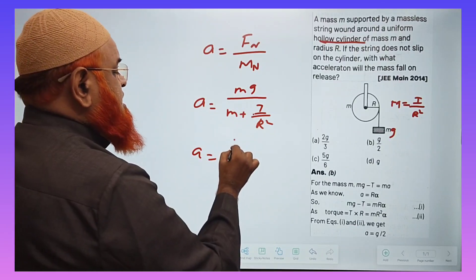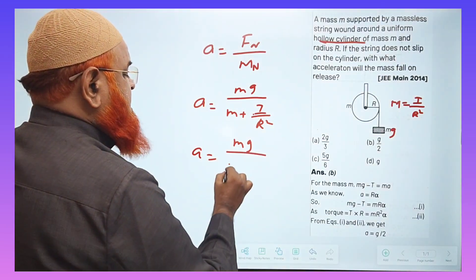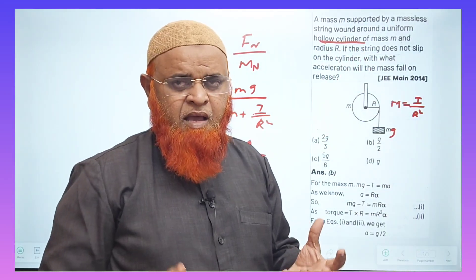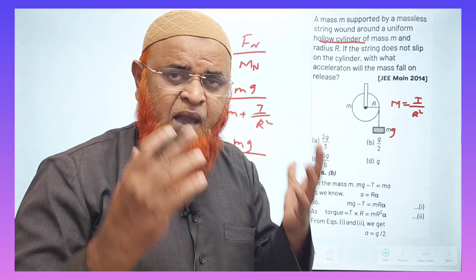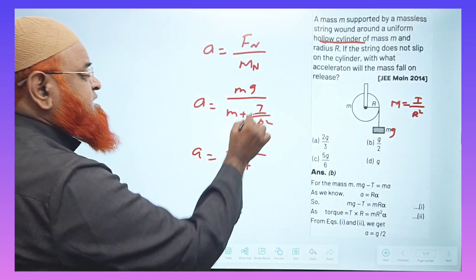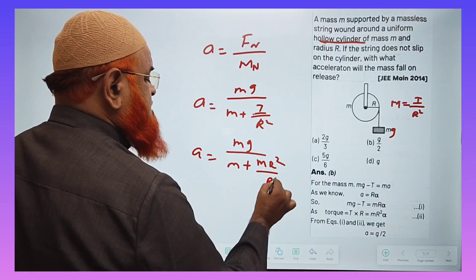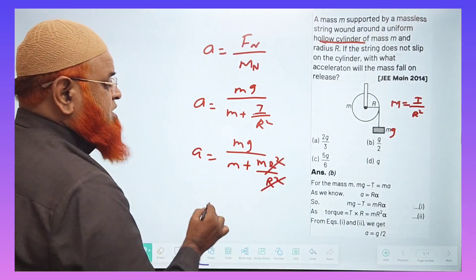Acceleration is going to be Mg by M plus, you know that this is a hollow cylinder. Hollow cylinder and ring having same moment of inertia. You can just write I can be taken as MR square divided by R square. That's it. So R square, R square gets cancelled.